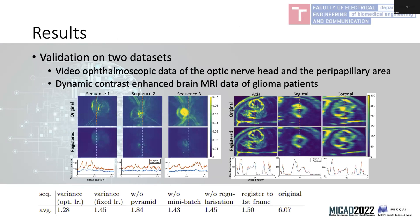We validated our novel implementation on two datasets: sequential ophthalmoscopic data and MRI data of oncology patients. You can see subjective results showing the original variance image and the variance image of registered images, as well as intensity profile curves of those images. On the left are results for ophthalmoscopic data; on the right we can see results for MRI data.